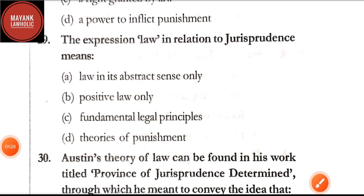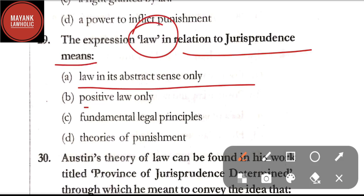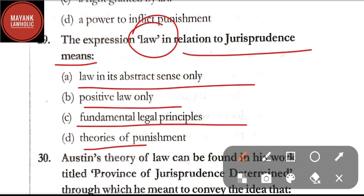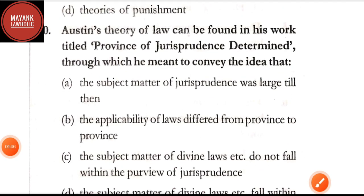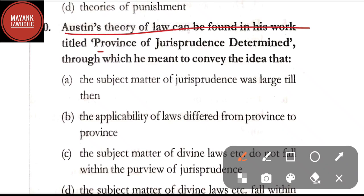Question number 29: the expression 'law' in relation to jurisprudence means — option A: law in its abstract sense only; option B: positive law only; option C: fundamental legal principles; option D: theories of punishment. The correct answer is option C, fundamental legal principles.